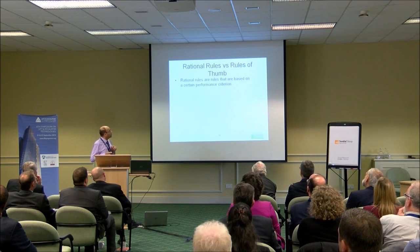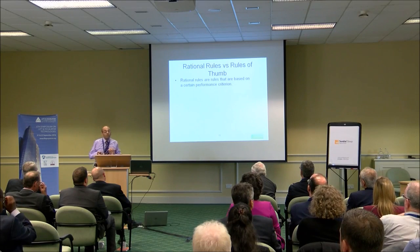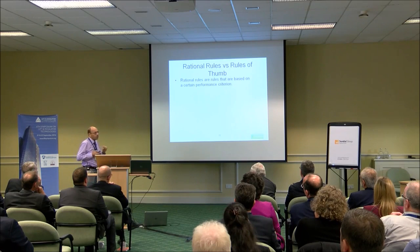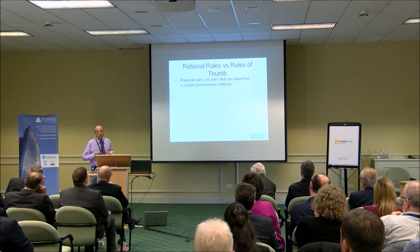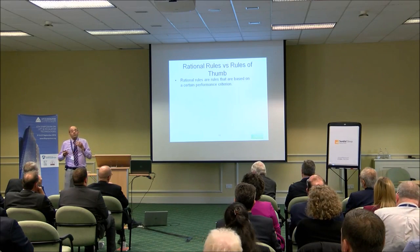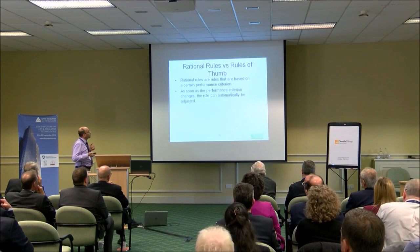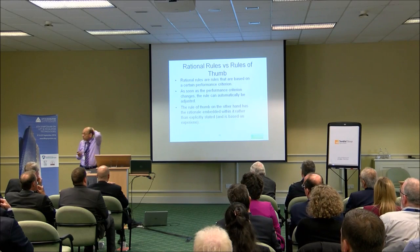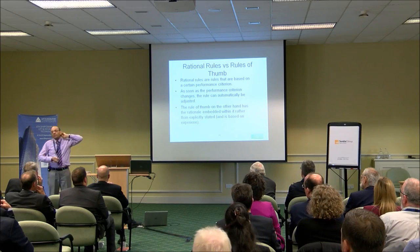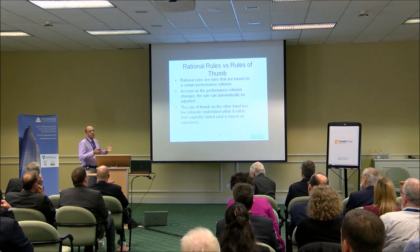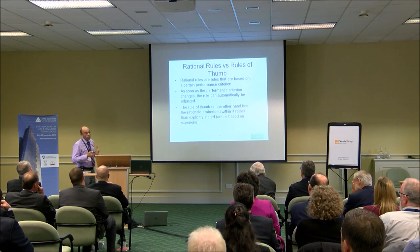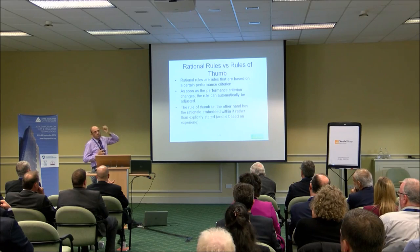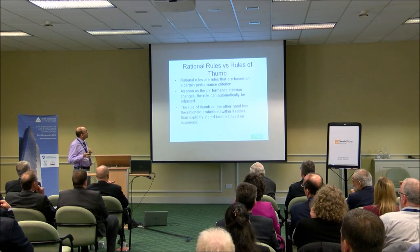What is a rational rule, as opposed to a rule of thumb? A rational rule clearly explains the performance criteria on which it is based, so if that performance criteria changes later, you can change the rule. The danger with the rule of thumb is that the rationale is embedded and hidden. For example, 'for every 100 occupants we have one lift or two lifts' — the assumptions are hidden, they're in the mind of the expert. That's why we need a rational rule as opposed to a rule of thumb.